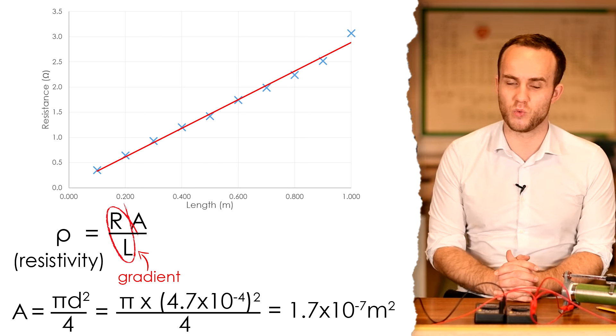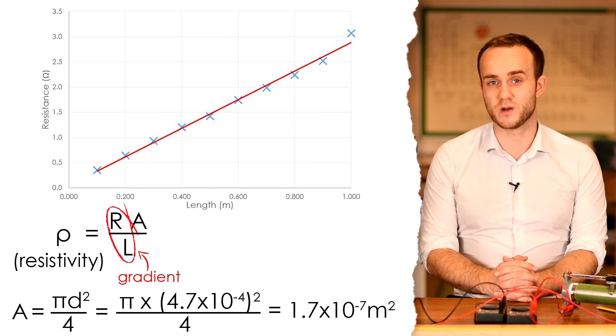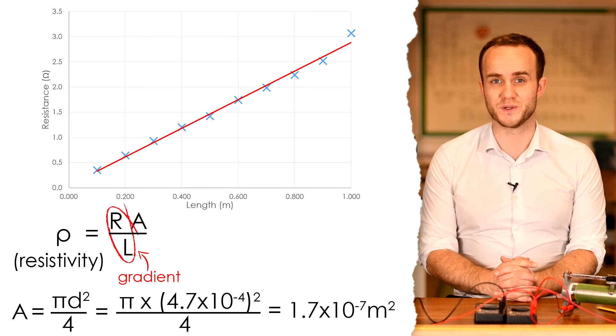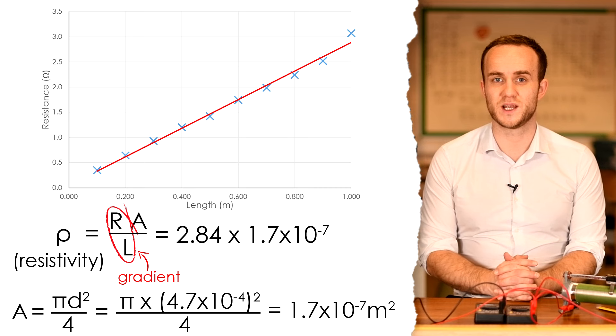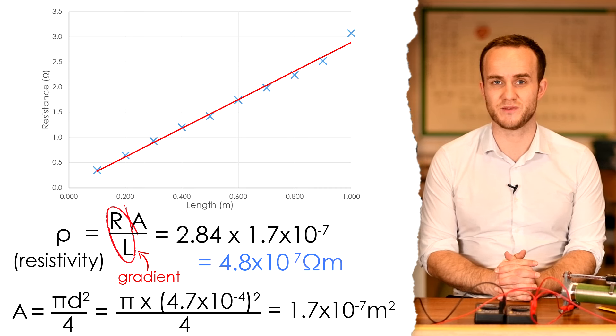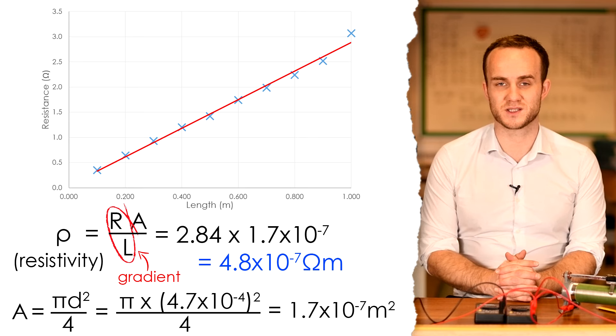We can only go to 2 sig figs because our diameter was to only 2 sig figs. So then to find resistivity we take our gradient of 2.84 times that by our cross-sectional area 1.7 times 10 to the minus 7. That gives us a resistivity of 4.8 times 10 to the minus 7 ohm meters.